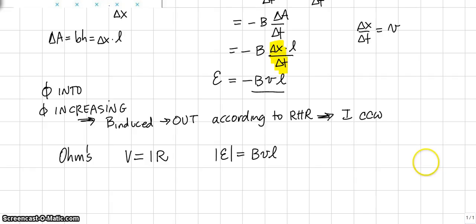So the EMF is B times V, the speed, times L, the length of the bar that's moving. So EMF equals current times resistance, which means B times V times L equals current times resistance. Therefore the current in this circuit is B times V times L over the resistance.